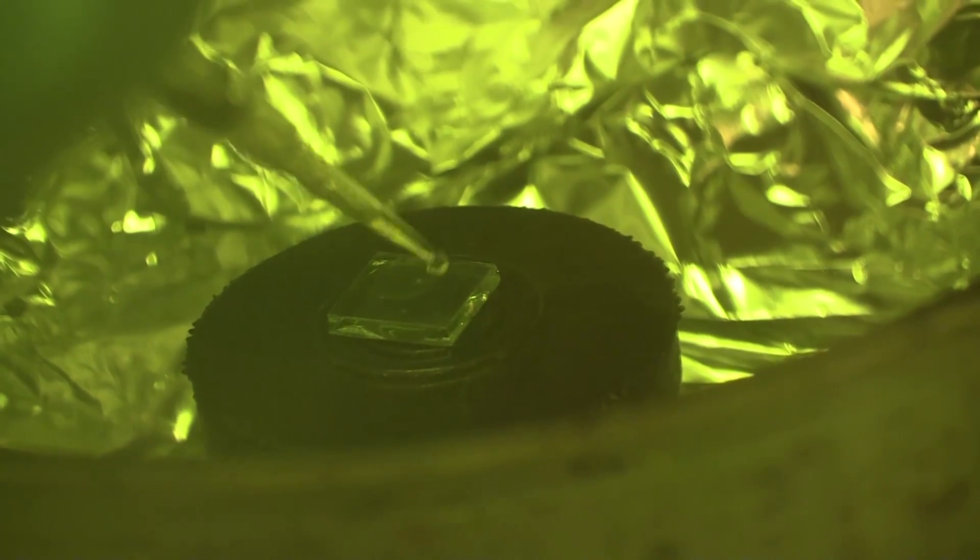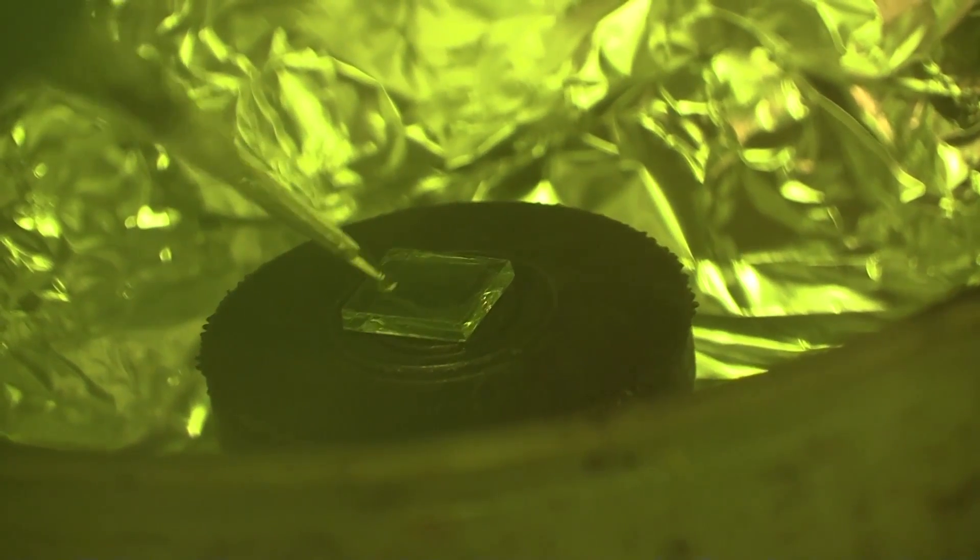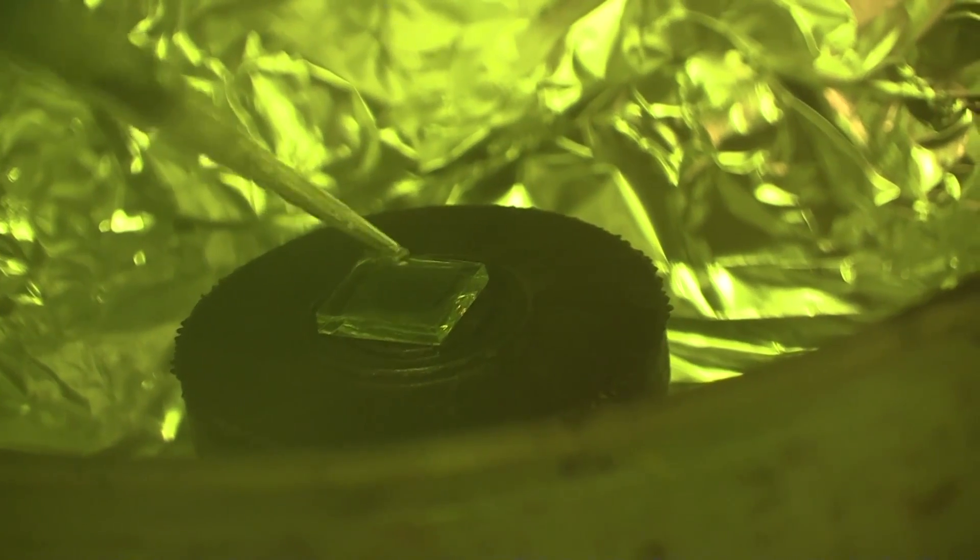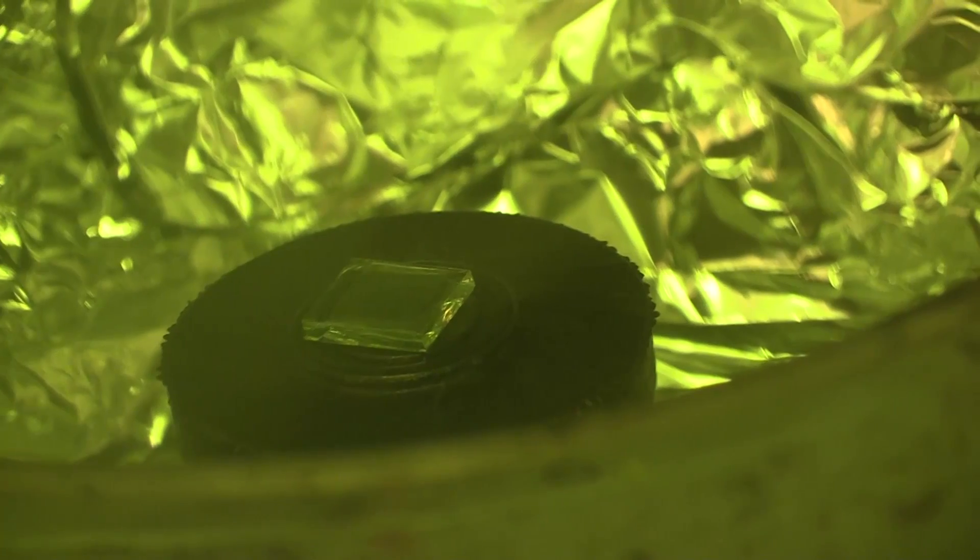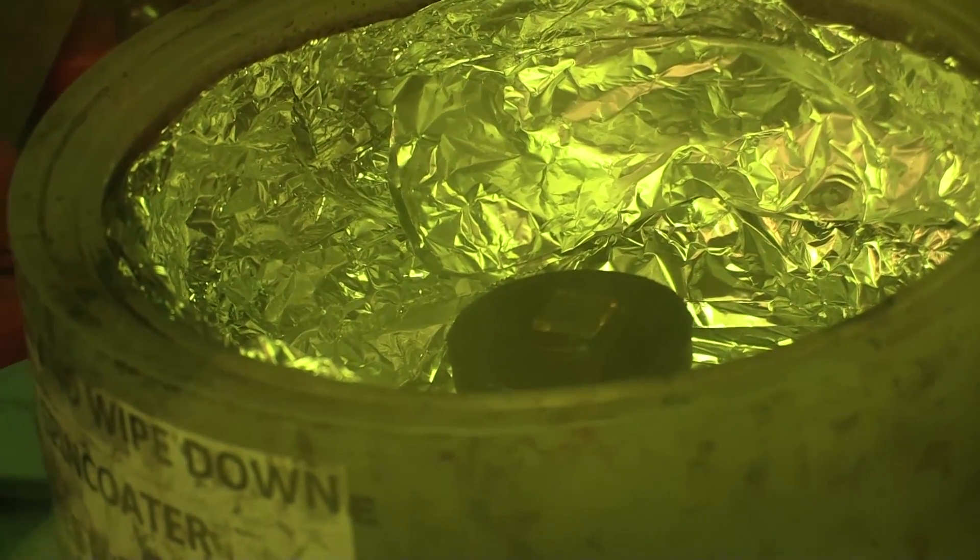We're going to be spin coating a precursor solution for the methyl ammonium lead triiodide perovskite. The precursor solution is a 3-to-1 molar mixture of methyl ammonium iodide and lead acetate trihydrate dissolved in anhydrous dimethyl formamide to a concentration of 40 weight percent solids.